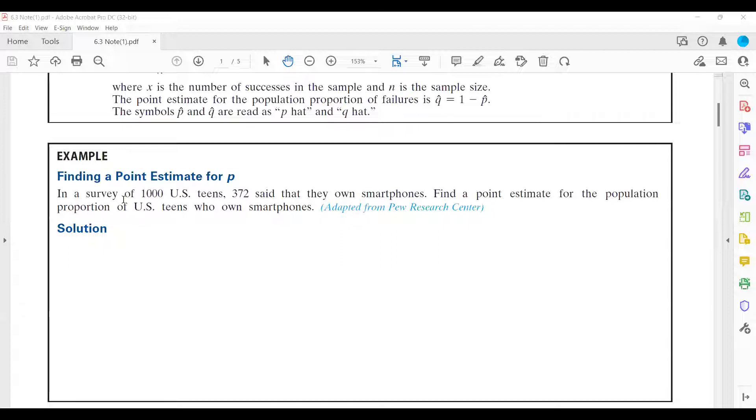You run a survey and the number of people who participated in that survey, you have a thousand of them. And 372 said yes, I own smartphone.